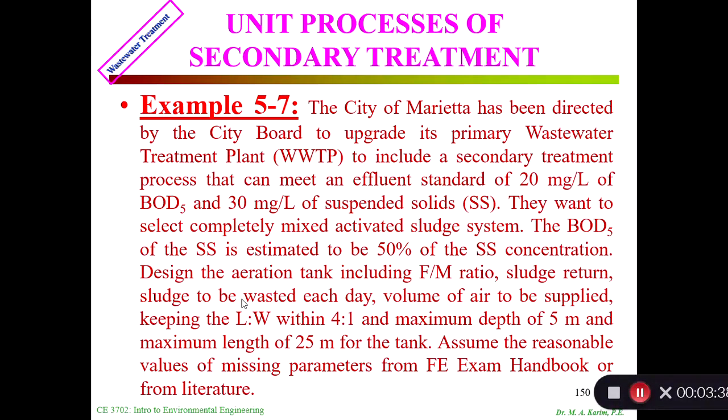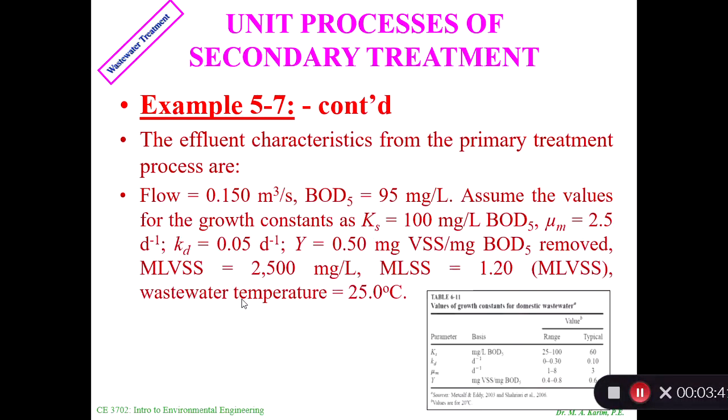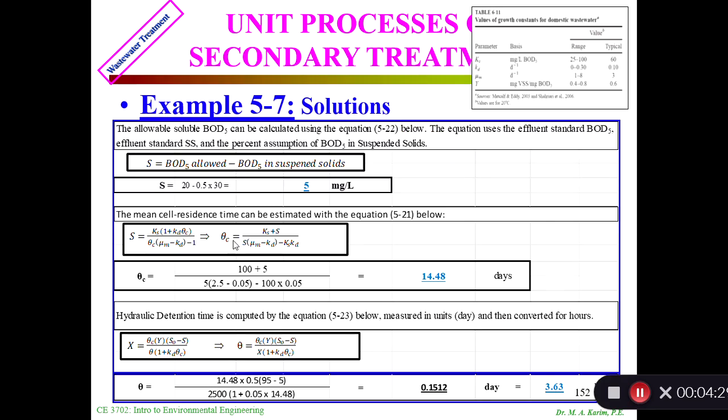The influent characteristics: flow is 0.15, BOD5 is 95. Assume values of growth rate Ks = 100, μm = 2.5, Kd equals this, Y = 0.5, and MLVSS is 2500 mg/L. MLSS is 1.2 times MLVSS. Wastewater temperature is 25°C. We need to know the temperature because we may need to convert something based on temperature. This is the table I showed before where we used to get those values.